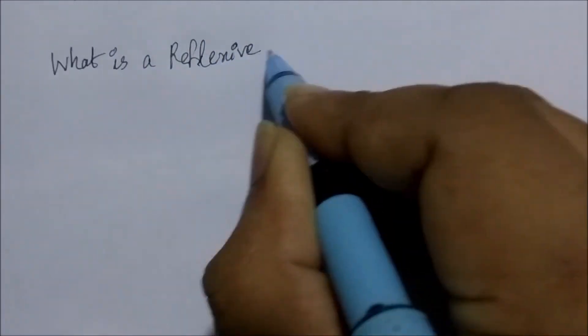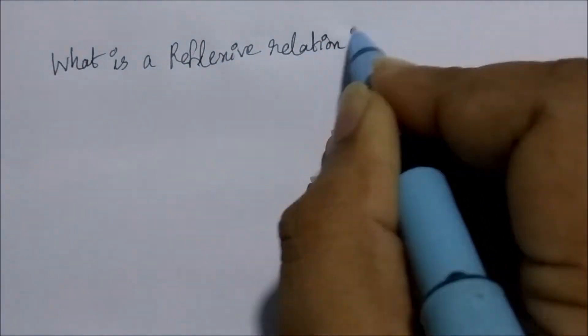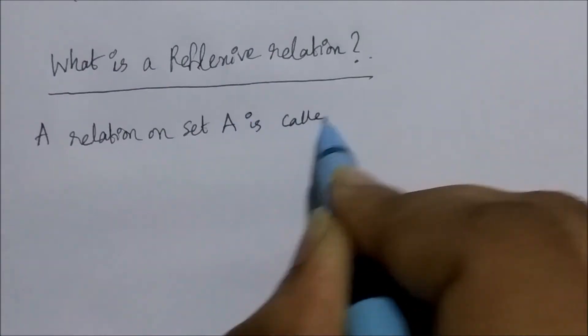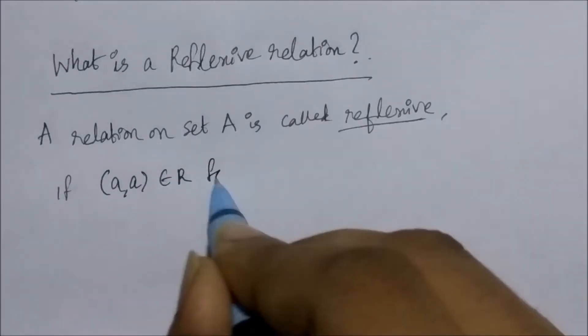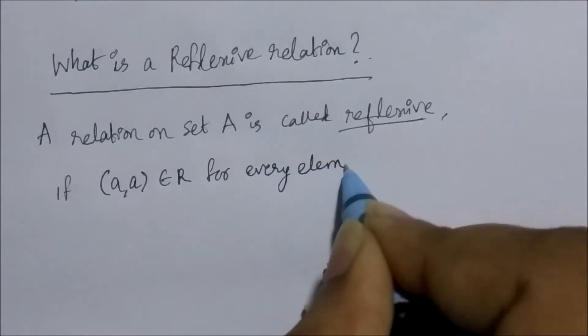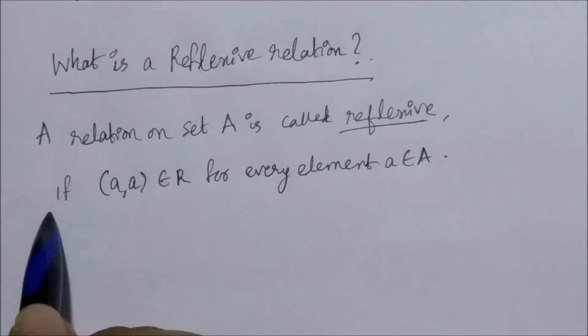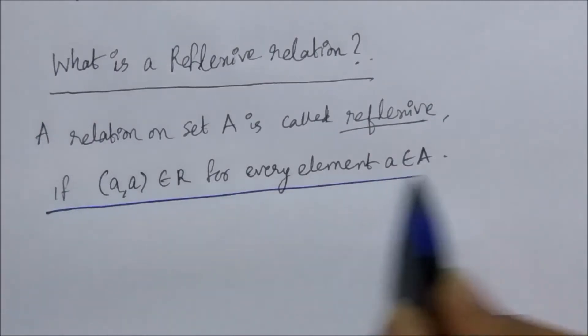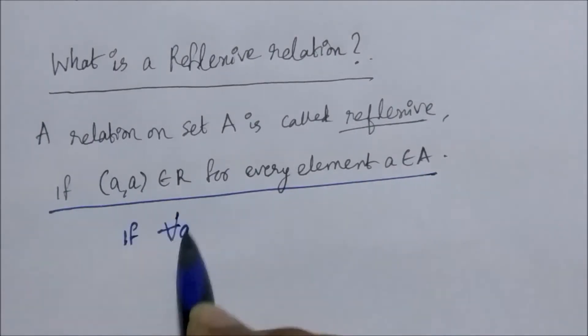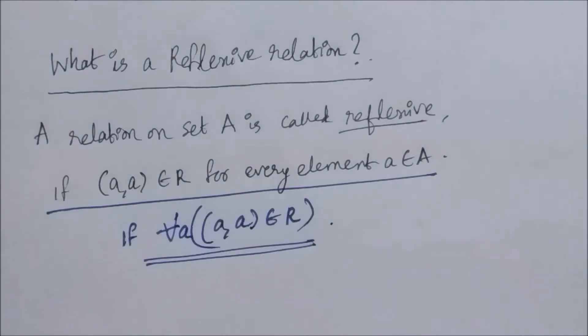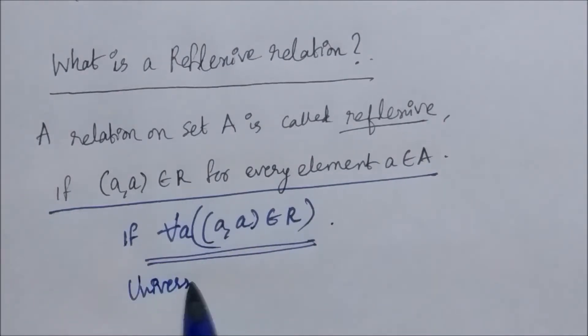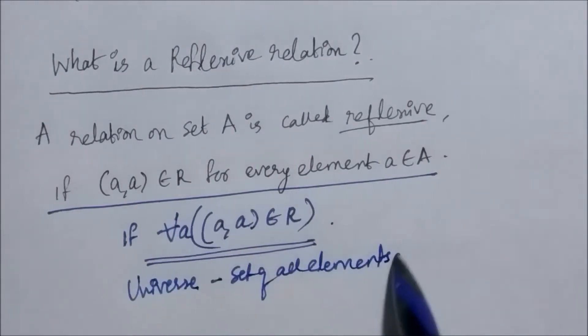Let's start with the reflexive relation. A relation on a set A is called reflexive if (A, A) belongs to the relation for every element A belonging to set A. Meaning that if for all the elements in A, A is related to A, then we say that such a relation is reflexive.